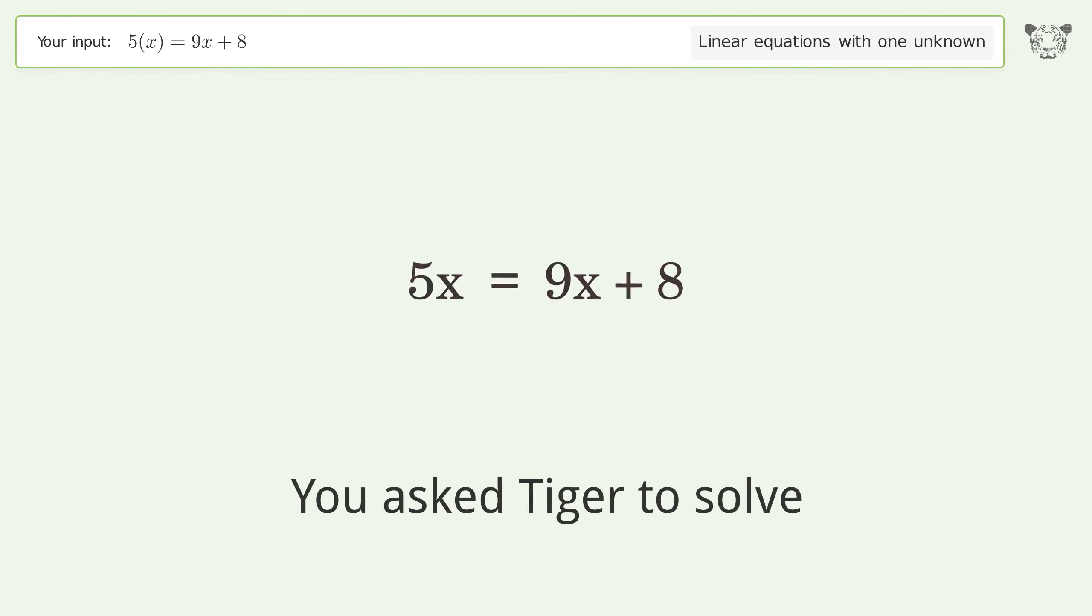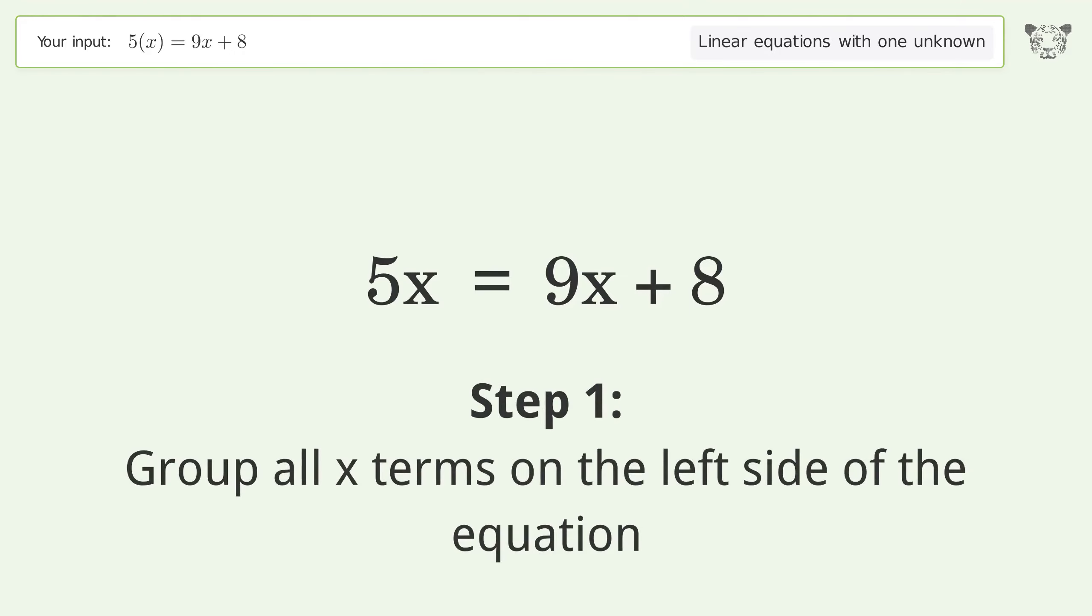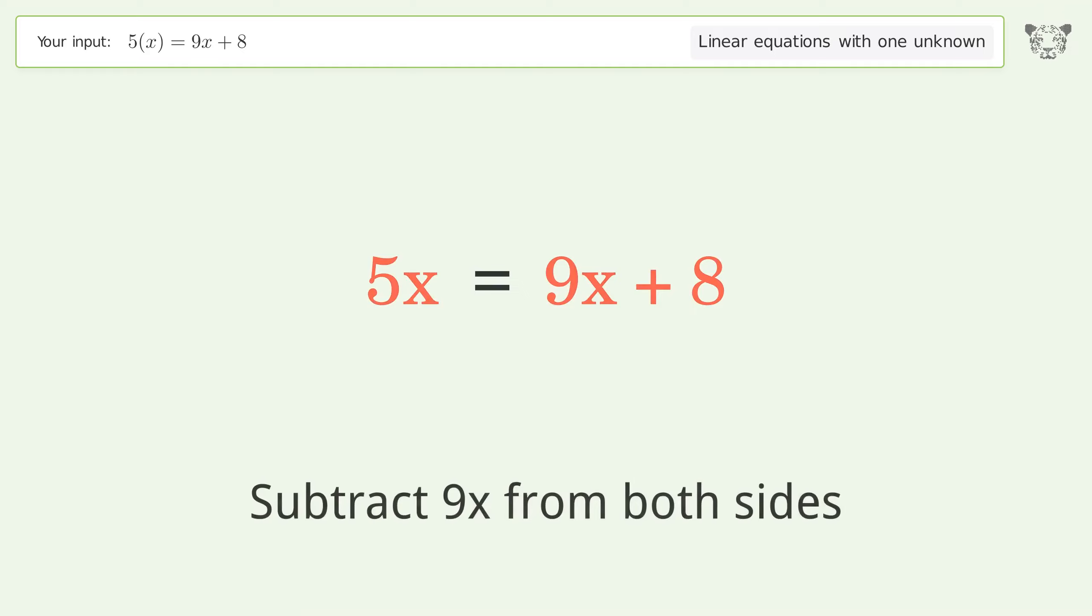You asked Tiger to solve this. This deals with linear equations with one unknown. The final result is x equals negative 2. Let's solve it step by step. Group all x terms on the left side of the equation. Subtract 9x from both sides.